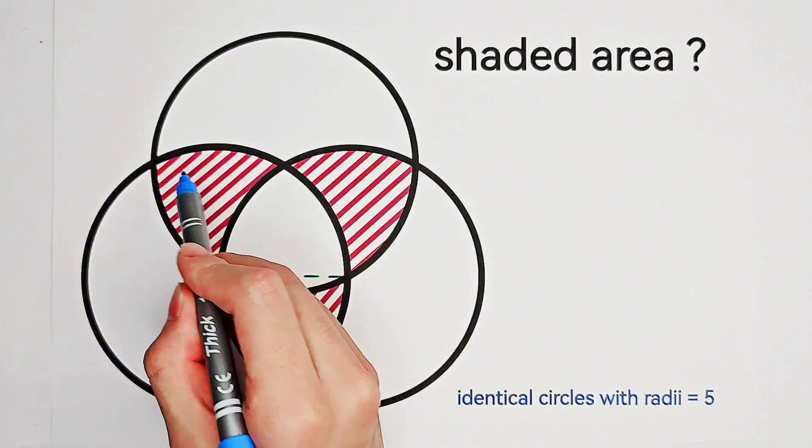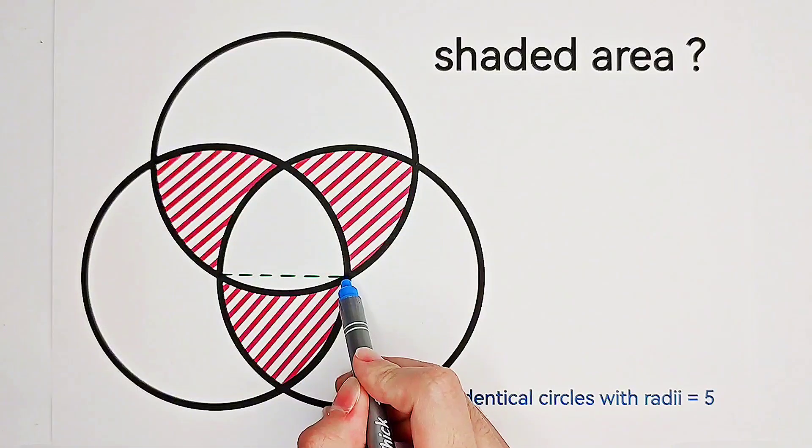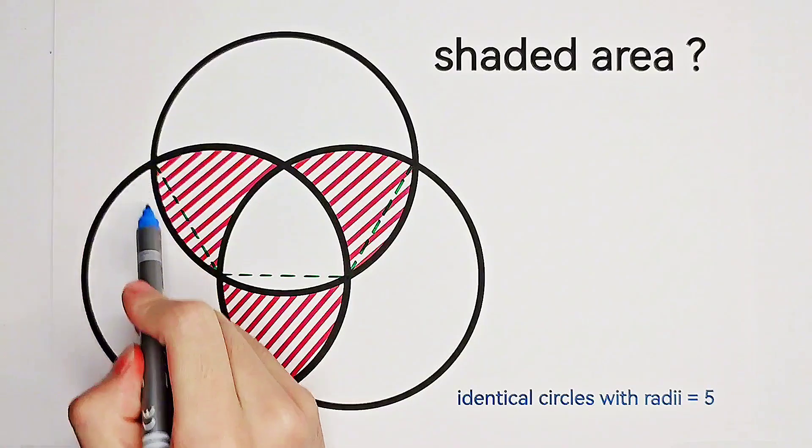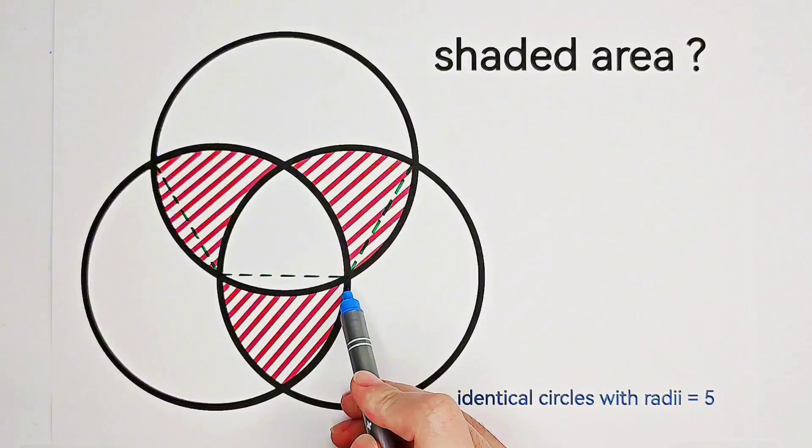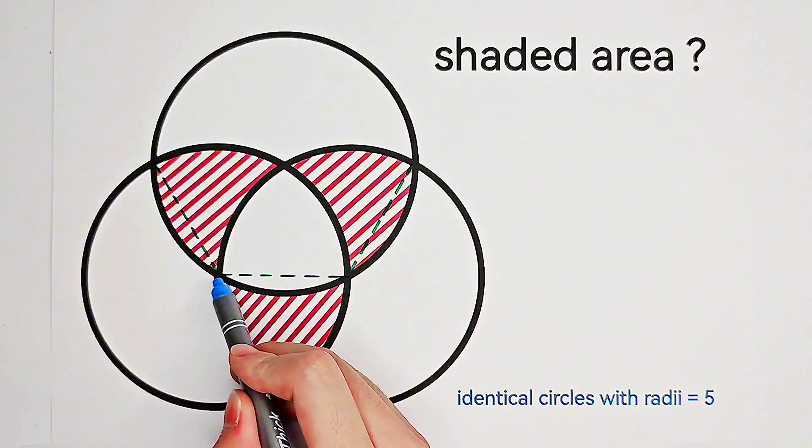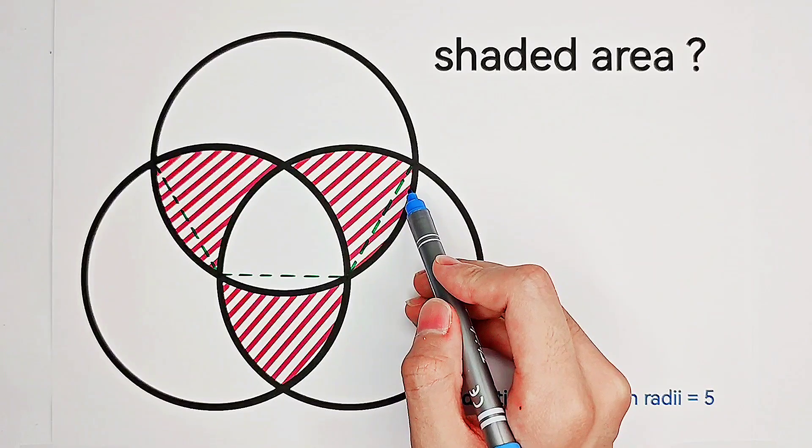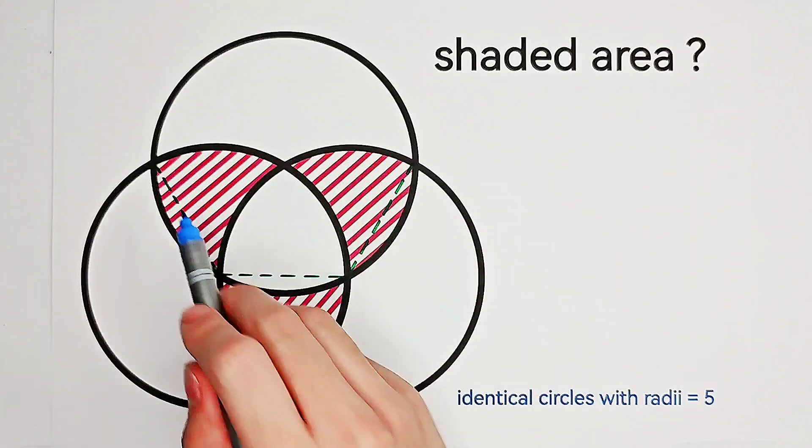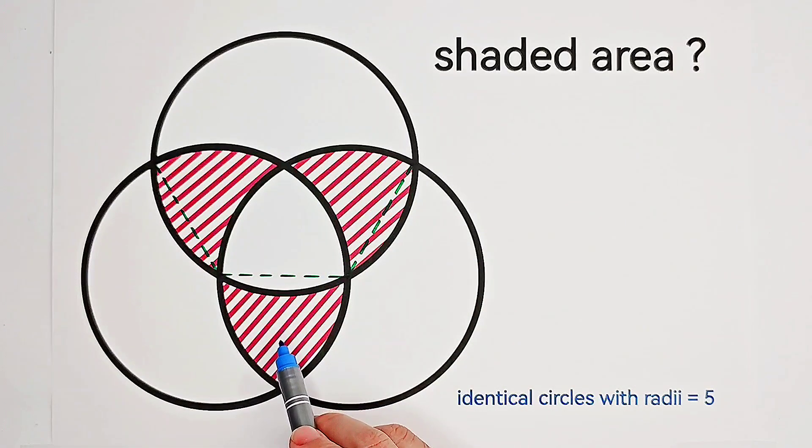If we connect this point to this point, this point to this point, then now we can conclude that these three arcs have the same degree. And the areas of these three arches are equal since these three figures, these three shapes, are identical and symmetric.